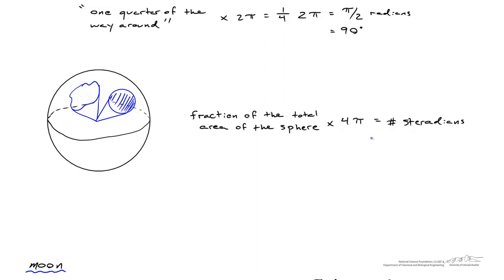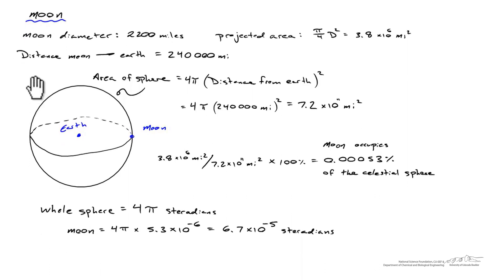Let's demonstrate this with a couple of common examples. Think about looking up at the moon from the earth. The diameter of the moon is about 2,200 miles, so its projected area is π/4 times the diameter squared, giving us something close to 4 million square miles. The distance of the moon from the earth is about 240,000 miles, so the area of the celestial sphere is 4π times that distance squared — effectively 4πr² — which gives an area of about 7.2 × 10¹¹ square miles.